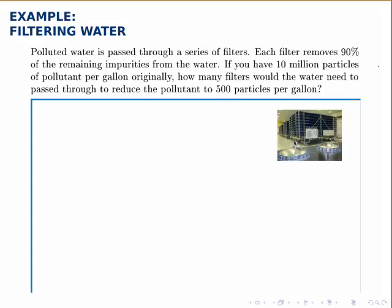The problem statement says polluted water is passed through a series of filters. Each filter removes 90% of the remaining impurities from the water. If you have 10 million particles of pollutant per gallon originally, how many filters would the water need to pass through to reduce the pollutant to 500 particles per gallon?